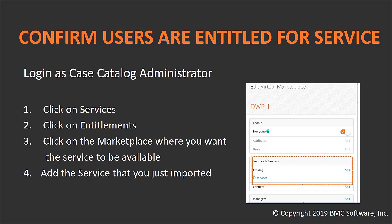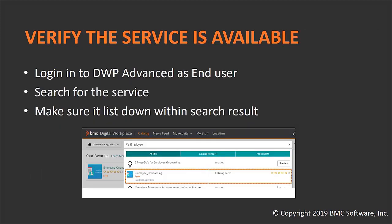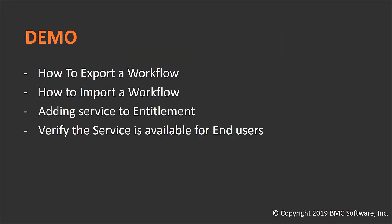The service name will be listed — check that box and the service will be available to those people who are entitled to have it. Once the service is published and entitled, you need to verify it is available for end users. Log into DWP Advance as an end user and search for the service you just published and entitled. If you are able to see the service, that means your service is available to the end users.